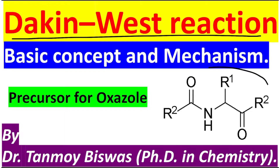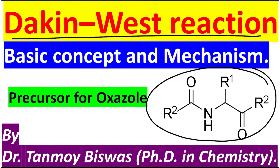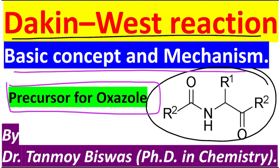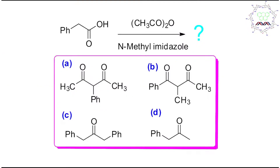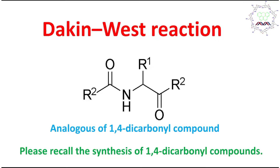This is the final product we are going to prepare using this name reaction. We shall discuss mainly the basic concept, mechanism, and one MCQ. This is very important because it is a precursor for oxazole preparation, which is a five-membered heterocyclic compound. I request you to please pause the video, try by yourself, and write your answer in the comment box — self-evaluation is essential for improvement.